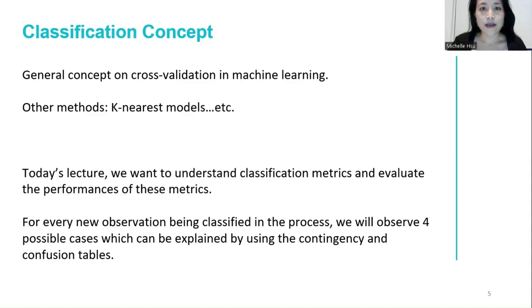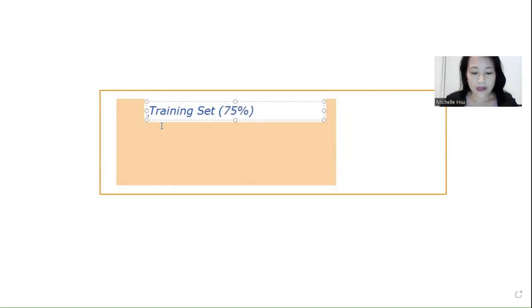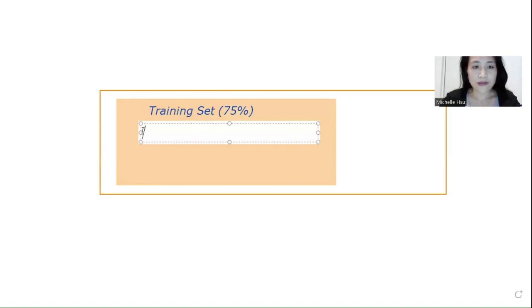Let me bring up the whiteboard to illustrate the procedure. Basically, the first step is that you split the dataset you have into training and testing datasets. The general rule of thumb is about 75% for training and about 25% for testing. We use this training dataset to build or to train the classification rule. This is also the data that already has the labels set, which is why we use it as a training set. For the remaining 25%, we call it the testing dataset.